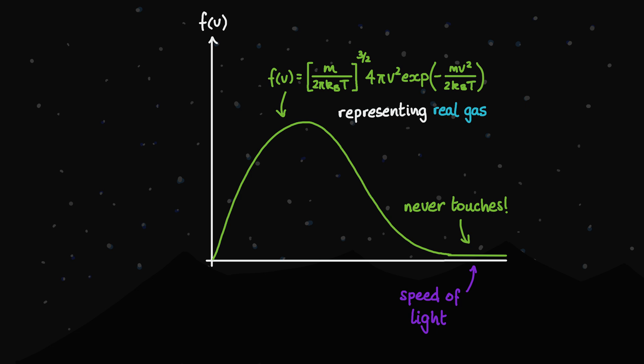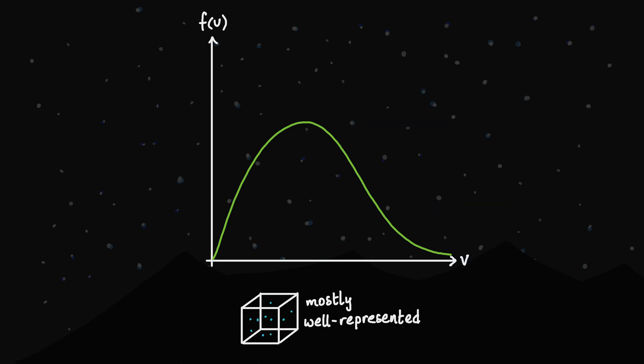But it's worth remembering that this graph is a mathematical model representing a group of real particles. In truth, there will be one particle that happens to have the fastest speed of all in the gas, and it's very unlikely that that speed is faster than the speed of light. Nevertheless, this mathematical model works really well for the very large majority of particles making up our gas.